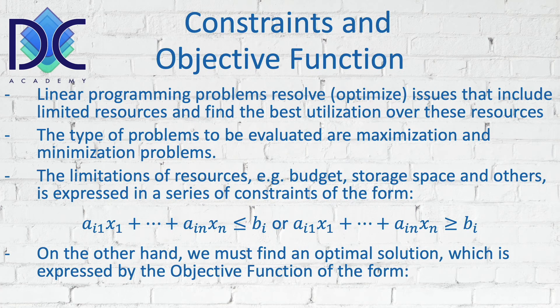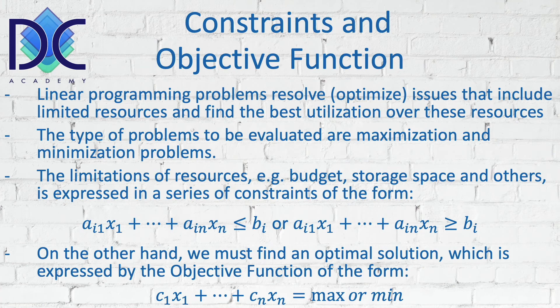We have to express the optimization using the objective function. The objective function is of the form of a coefficient cᵢ multiplied with the quantity xᵢ. For example, the parameter c can express the profit you will obtain when you sell a certain product. We have those profit coefficients for all variables, and when we have a profit we want to maximize it. When we have costs, we try to minimize the cost. The objective function has to be derived from the information we have.